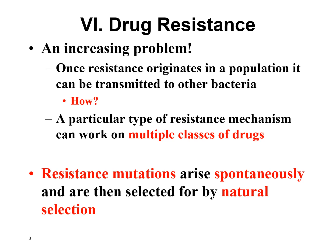There are two ways that transmission can happen. The first way is vertical gene transfer — that's when bacteria reproduce, they copy their DNA and pass on that antibiotic resistance gene to their offspring, because they do asexual reproduction and create clones. So all their offspring will have that antibiotic resistance gene as well.